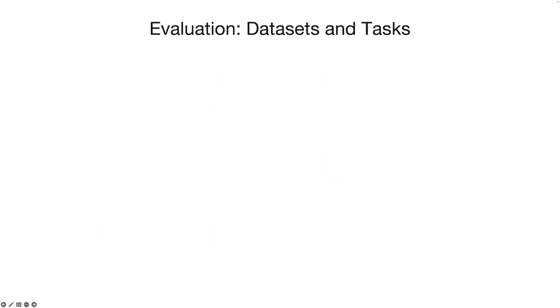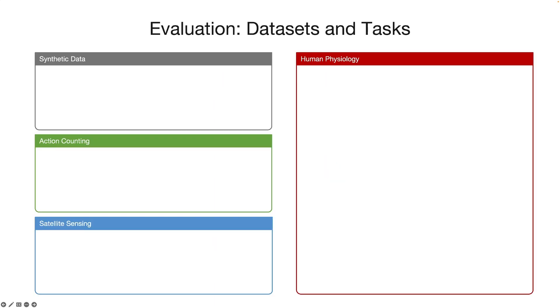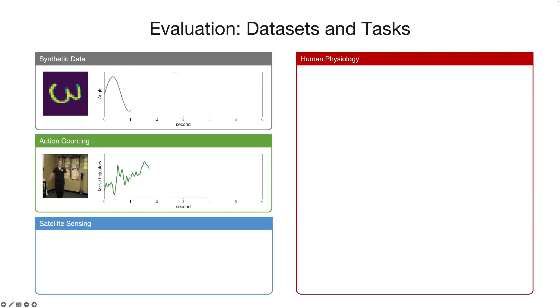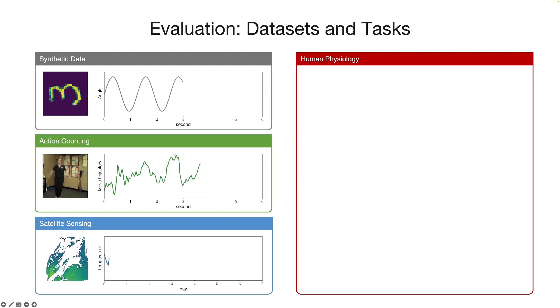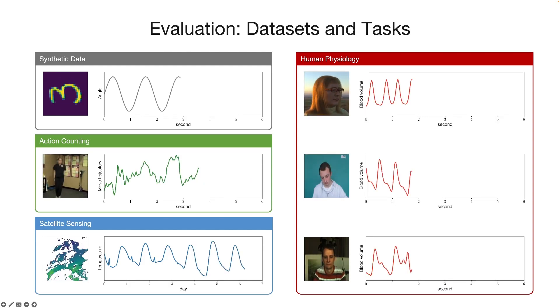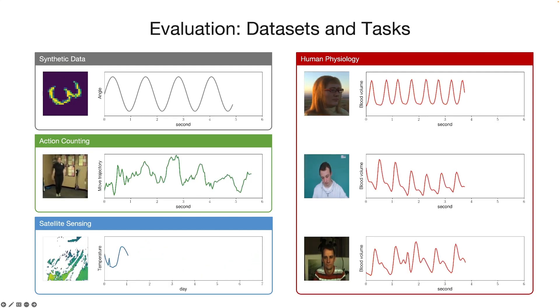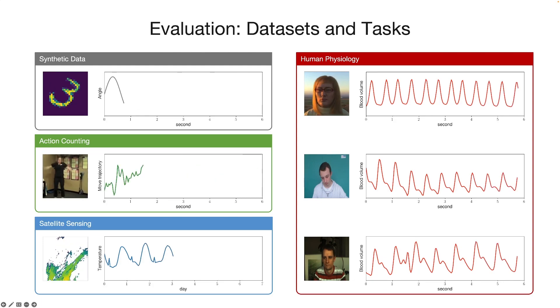To evaluate SIMPER, we perform experiments on six periodic learning datasets from multiple domains. These include a synthetic vision dataset for rotation frequency prediction, an in-the-wild human action counting dataset, land surface temperature sensing via satellite imaging, and finally, one synthetic and two real human physiological measurement datasets for PPG and heart rate prediction.